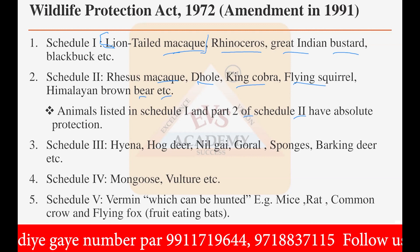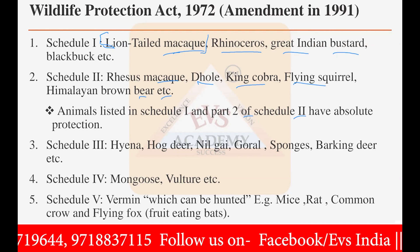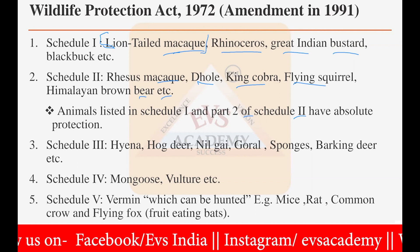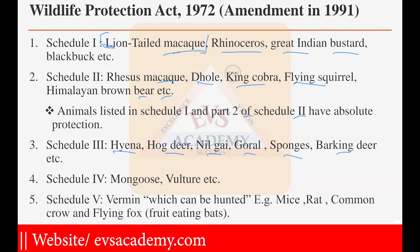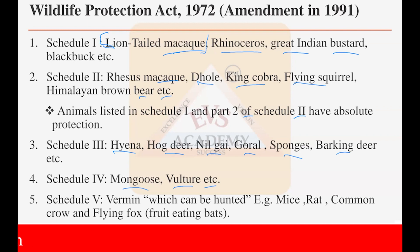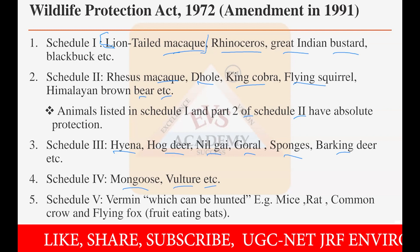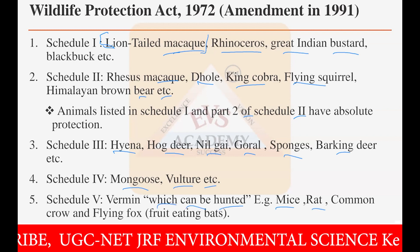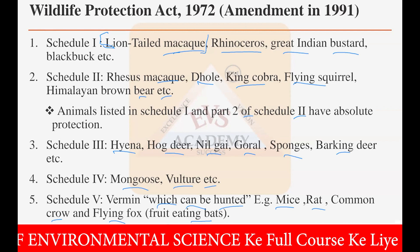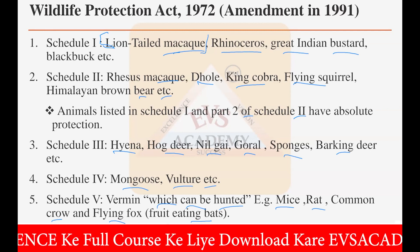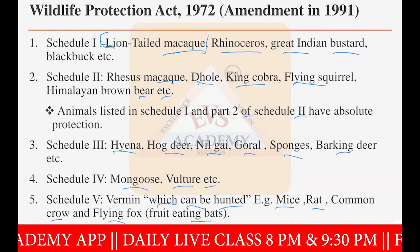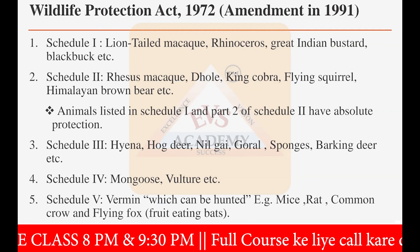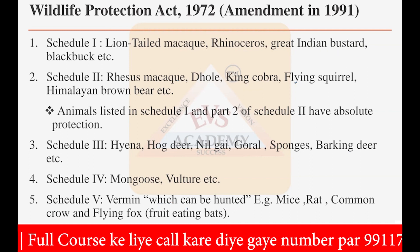Schedule one and two animals are the most protected animals. Schedule three includes hyena, hog deer, nilgai, coral sponges, and barking deer — these are also prohibited. Schedule four includes mongoose and vulture, which also receive some protection; only the chief wildlife warden can permit hunting of these. Schedule five — vermin animals — includes mice, rat, common crow, flying fox, and fruit-eating bats, which are allowed to be hunted. These are only few examples; the full list is very large.